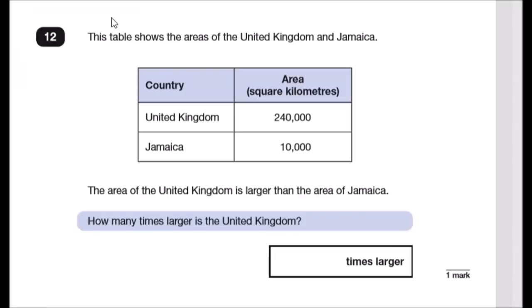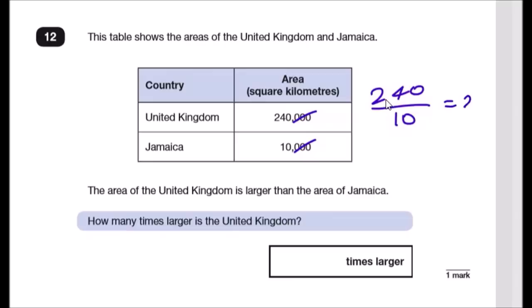Question 12: the table shows the area of the UK as 240,000 km² and Jamaica as 10,000 km². To find how many times bigger, divide: 240,000 ÷ 10,000 = 24. The UK is 24 times bigger than Jamaica.